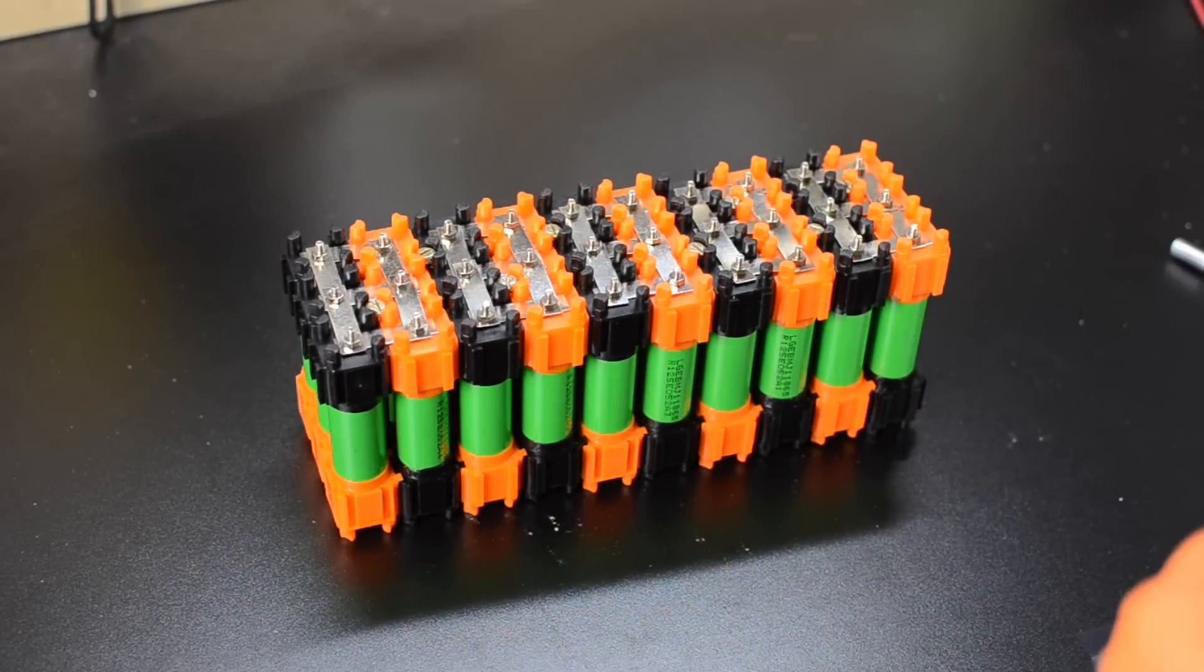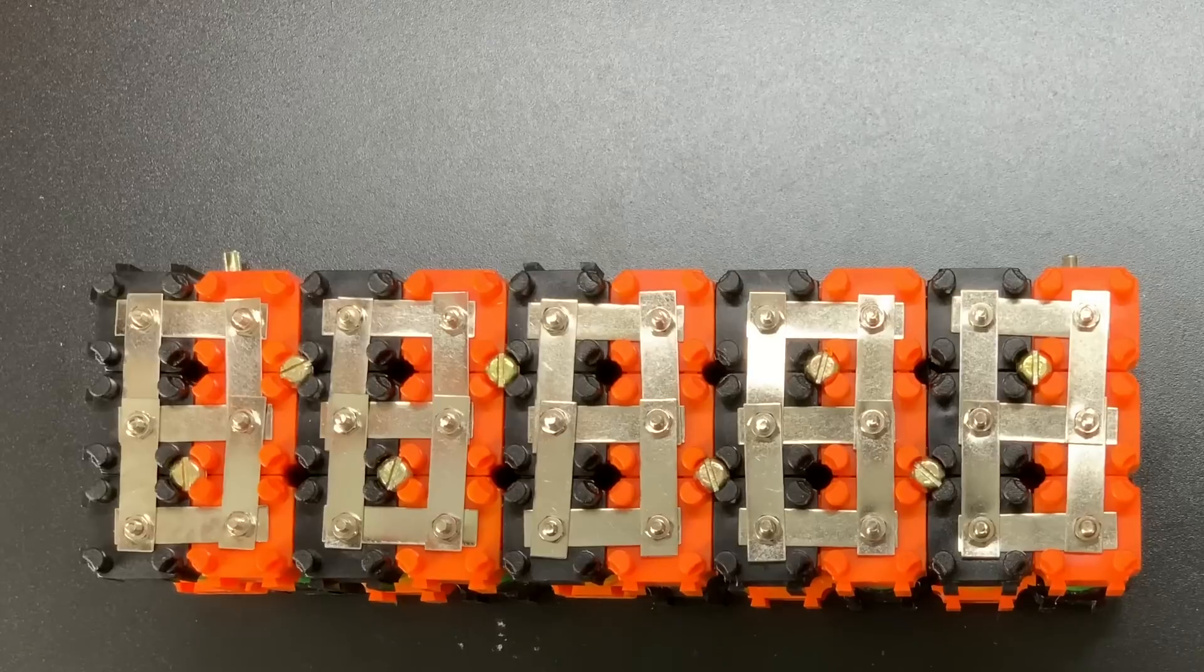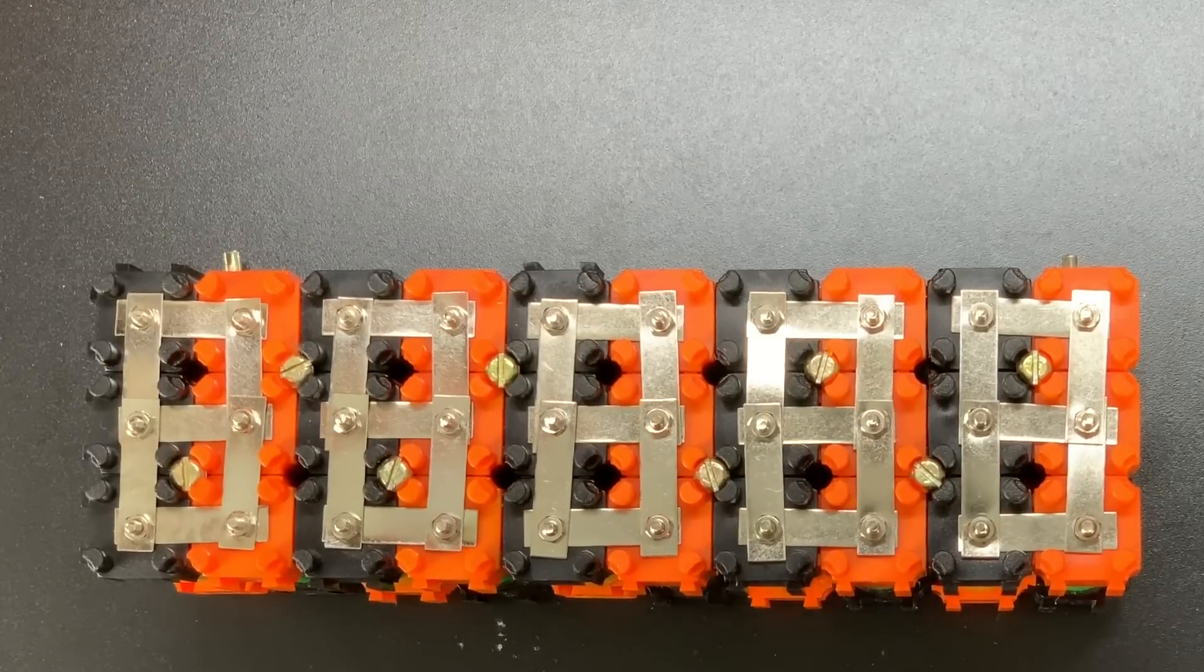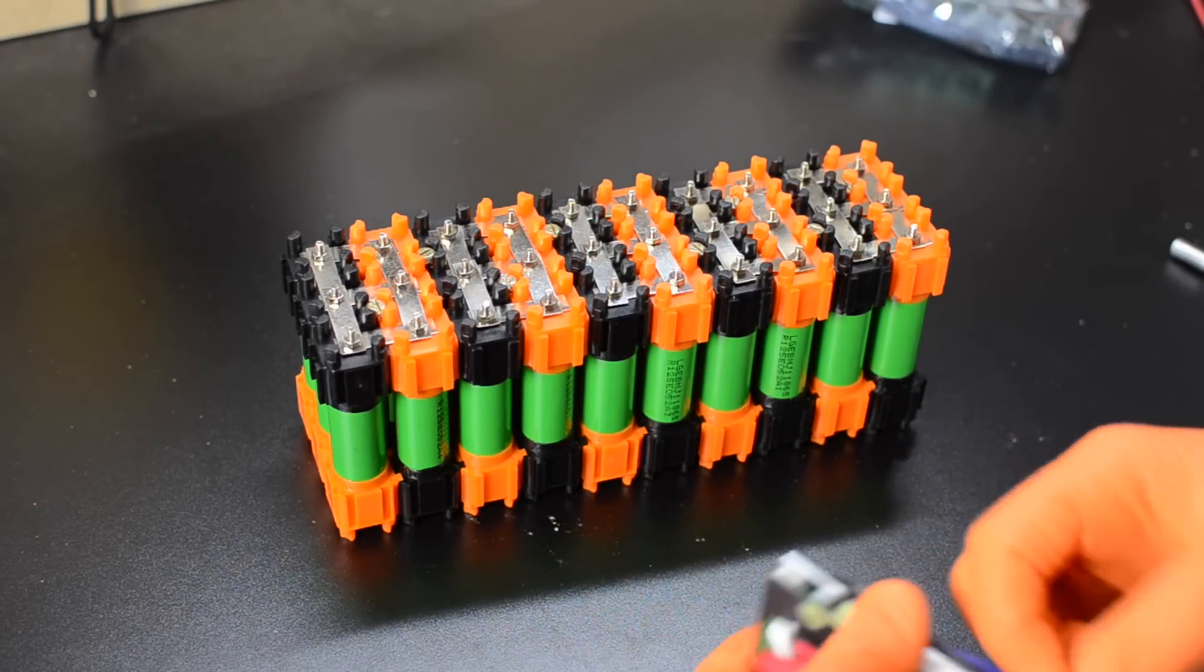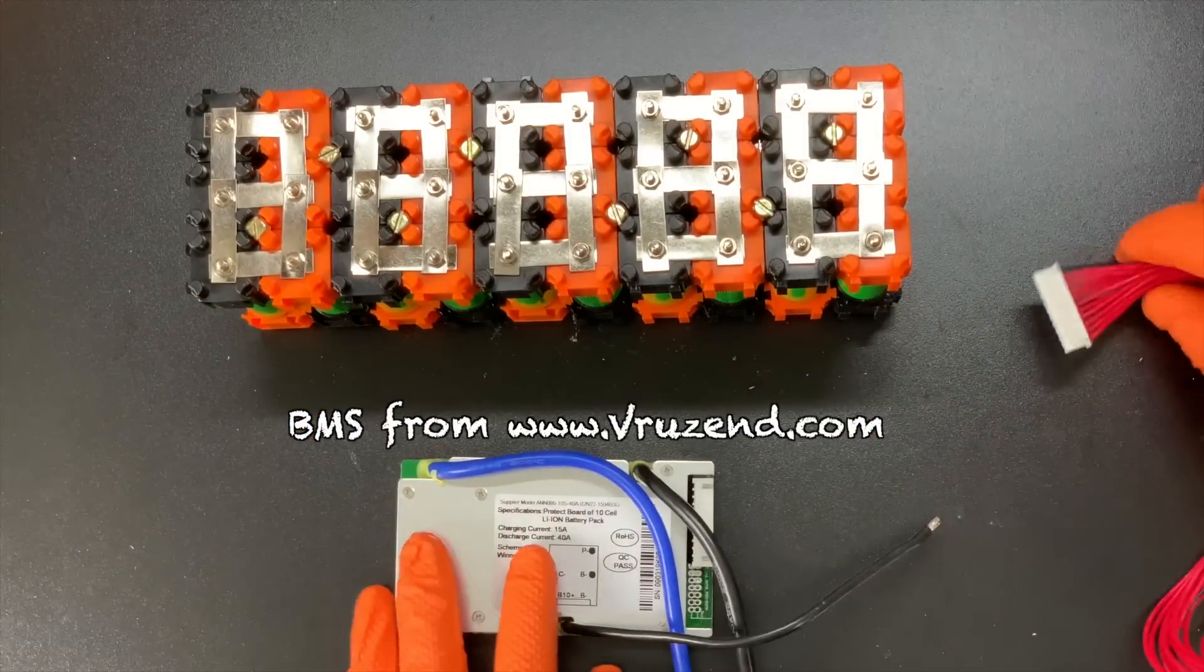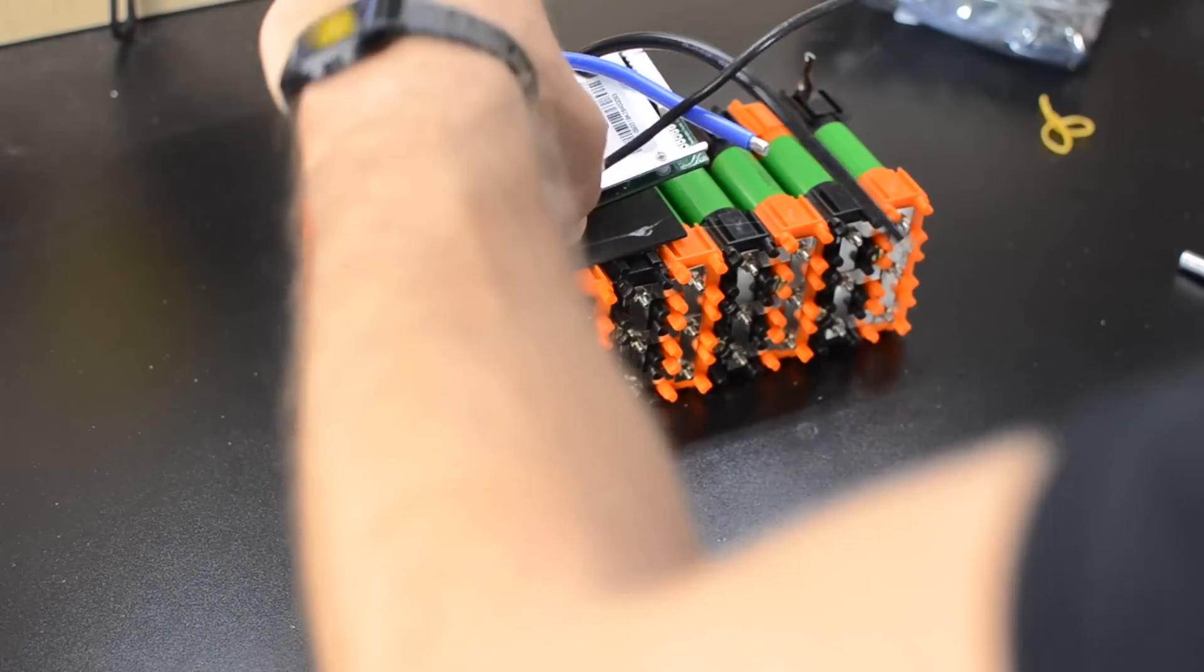Once I have all of my figure eight bus bar connections done, then I've basically finished the cell connections of this pack. This is theoretically a live battery now, though we'll want to add a BMS next because we're responsible battery builders here. I'm using a 10S BMS because this is a 10S 36 volt pack. This BMS is from vruzen.com as well, but you can get a BMS from a number of places. After I have it on the battery, I'll connect the B-minus wire to the negative terminal of the battery.